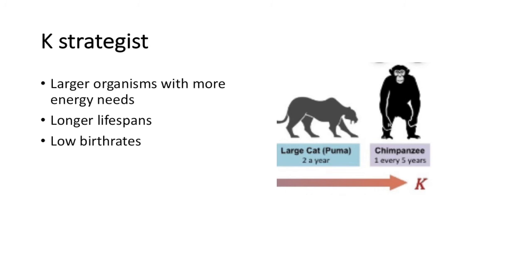For example, large cats like pumas might have two offspring a year, and chimpanzees — our closest living species relatives — have just one offspring every five years. These organisms have higher energy needs and invest more resources into their offspring. They also occupy ecological niches like predators where they're required to hone their skills, so they invest more time and energy into their offspring.